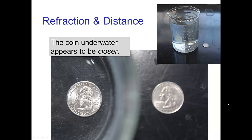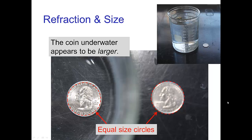If you take another object, say a coin, and put it in the bottom of the glass of water and look carefully, you'll realize that the coin when it's underwater appears to be closer than a similar-sized coin that is outside of the glass. Just as you see in these photos here, I have two coins — one inside of a beaker of water and the other right outside. And in fact, not only does the coin underwater appear to be closer, it also appears to be slightly larger.